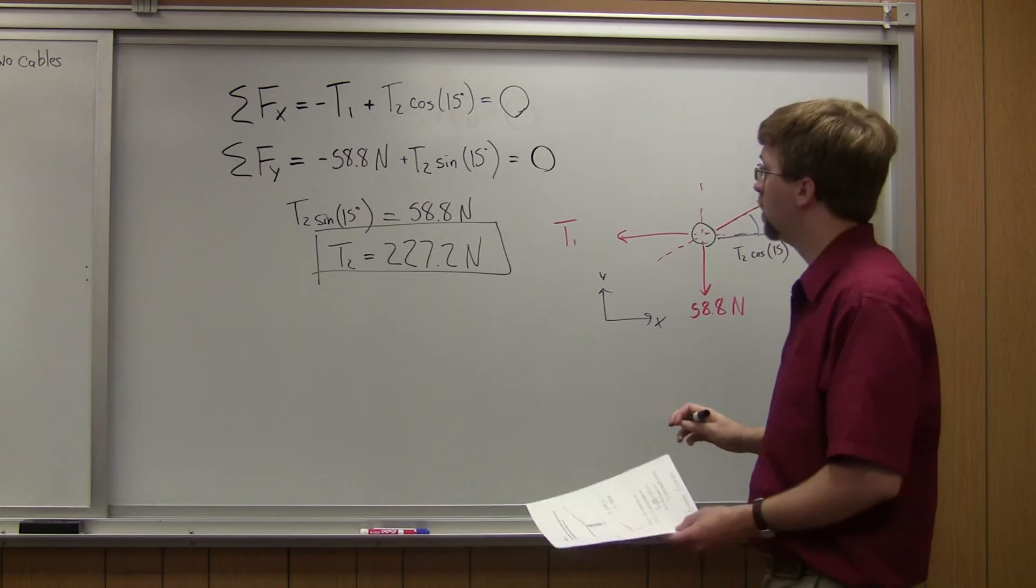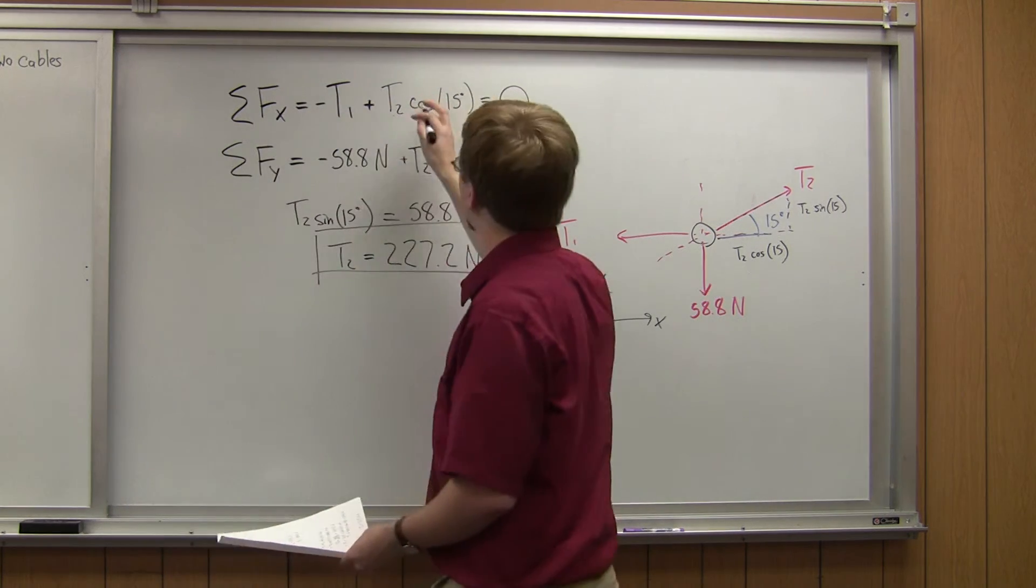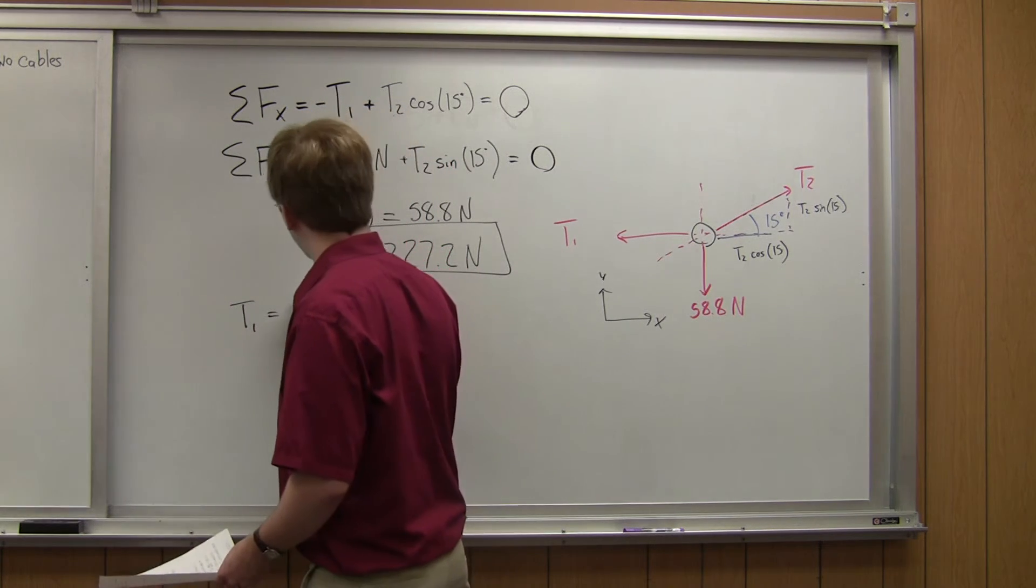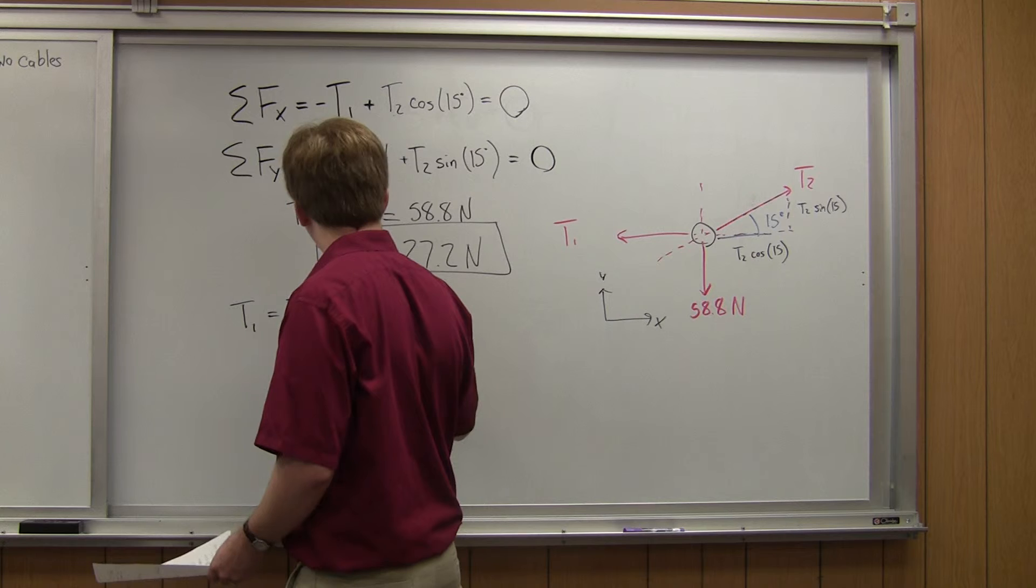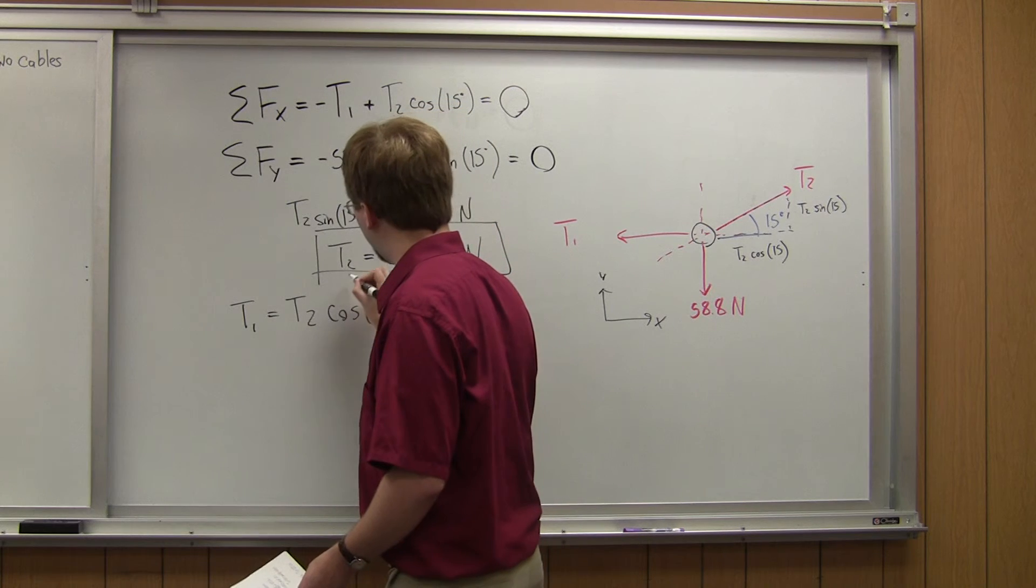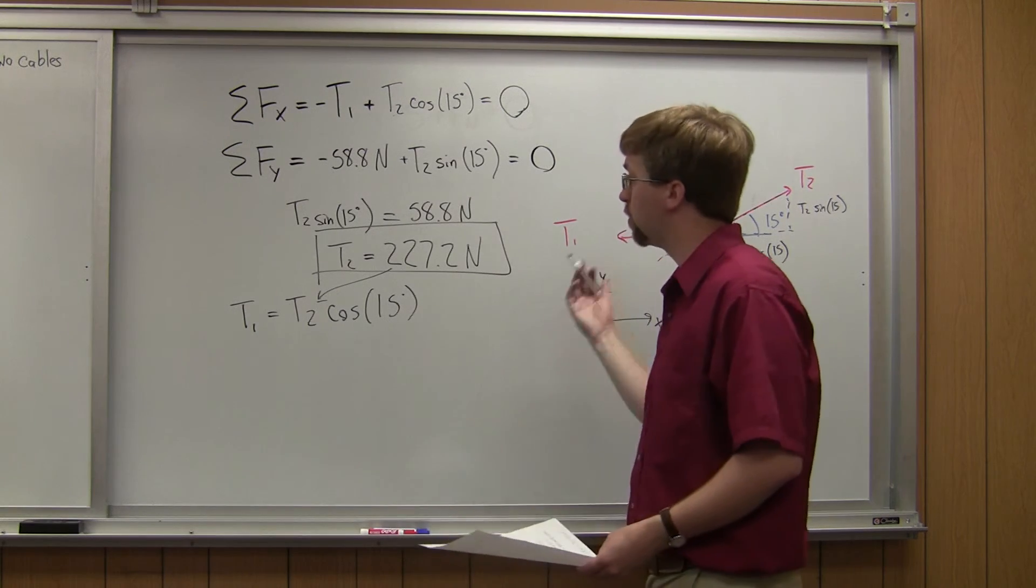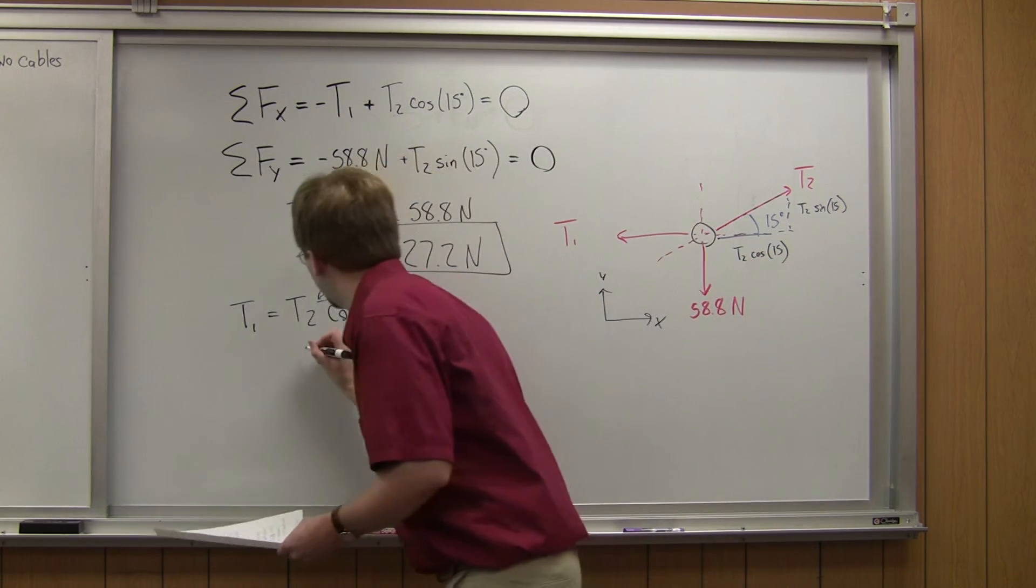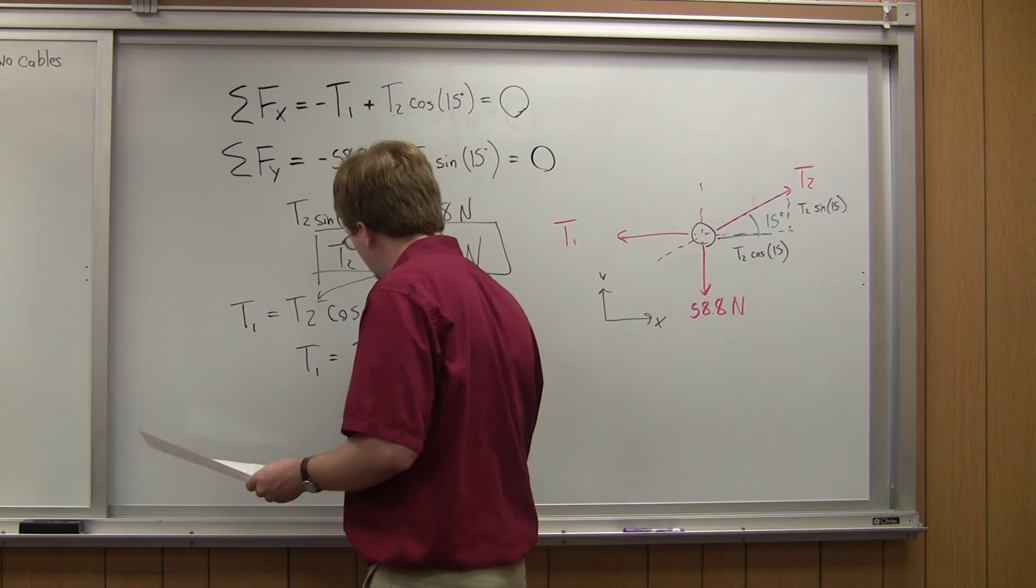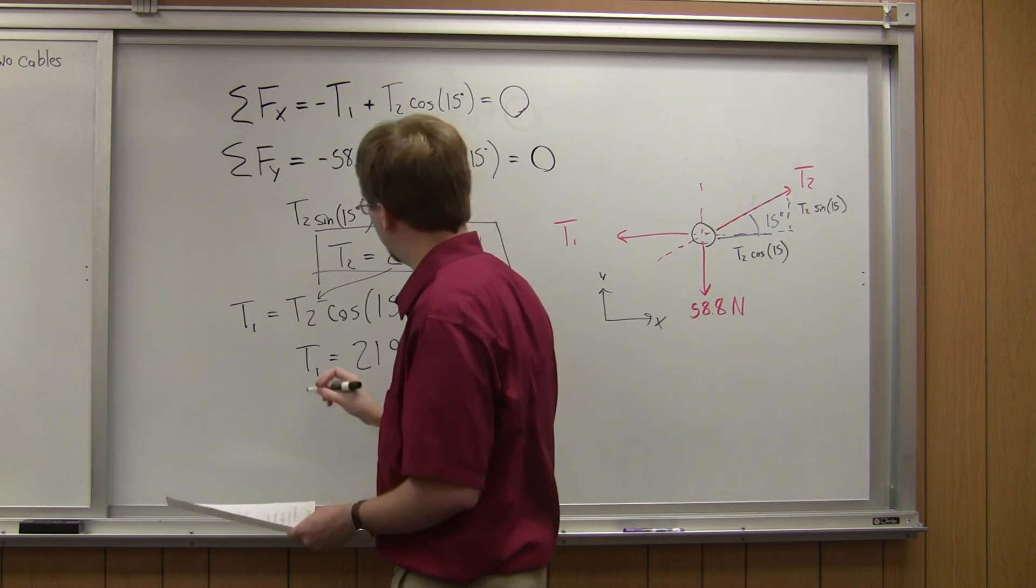So there is the tension in cable 2, the one going off at a 15 degree angle. So now I need to figure out T1. And I can use that first equation up there. So if I rearrange this slightly, I will get T1 will be equal to T2 times the cosine of 15 degrees. So T2 I just found. So I can plug this 227.2 newtons into that. I multiply it by the cosine of 15. And I'll get my tension in cable 1 to be equal to 219.4 newtons.